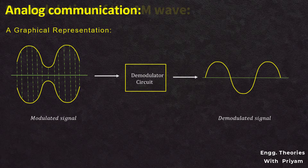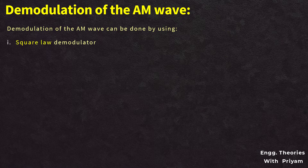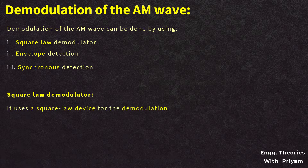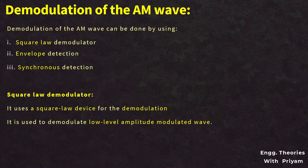Demodulation can be done using a square law demodulator, envelope detection, or synchronous detection. In this lecture we will understand what the square law demodulator is and how it functions to demodulate an amplitude modulated signal to generate the message signal. The square law demodulator is used to demodulate an AM signal by using a square law device such as a diode, and it is used in the demodulation of low-power amplitude modulated signals.